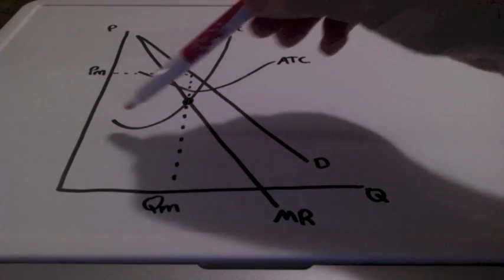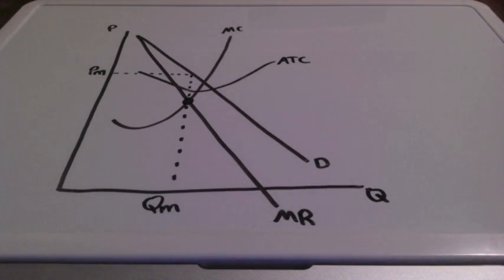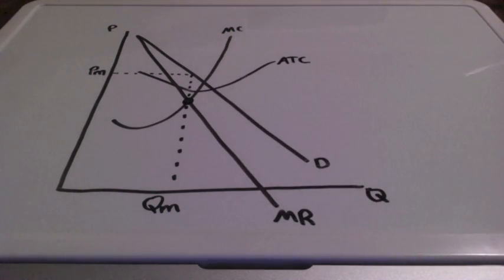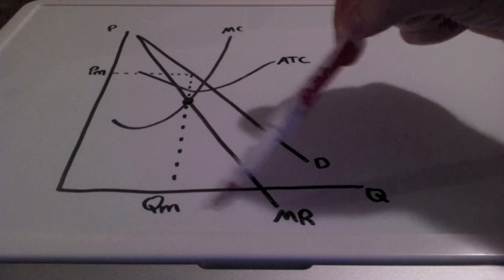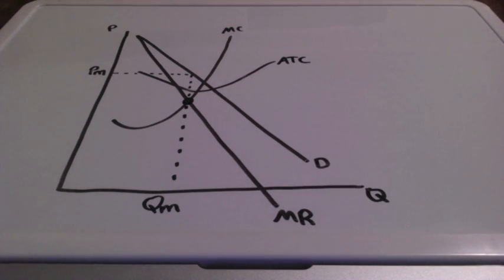Now remember, the marginal cost curve represents the firm's supply curve. And if the goal of the government is to lower prices for consumers, and at the same time quantity increases, this results in a rightward shift in the supply curve.